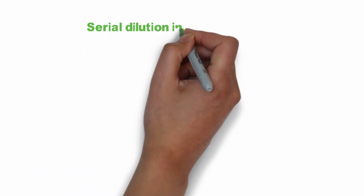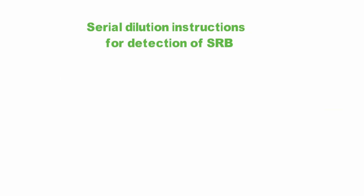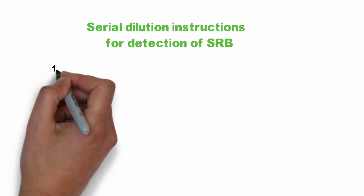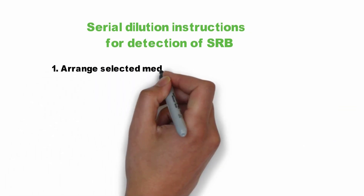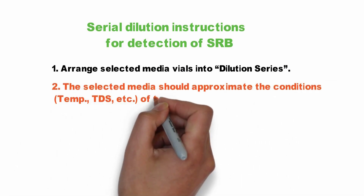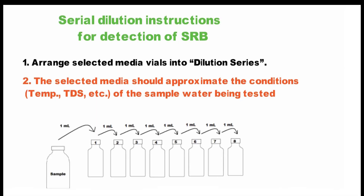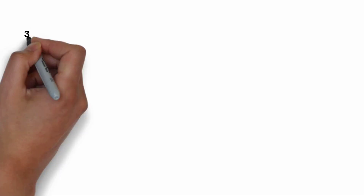In this video we will talk about the dilution series for detection of SRB bacteria. First, arrange the selected media vials into a dilution series. The selected media should approximate the conditions of the temperature and salinity of the sample water being tested.